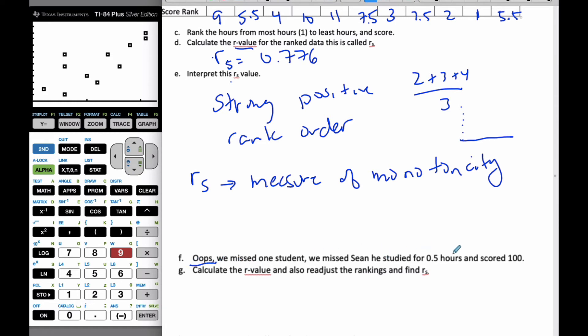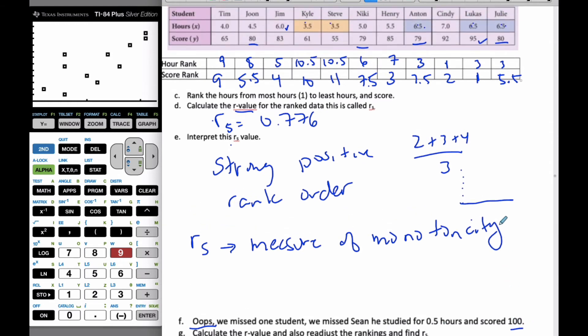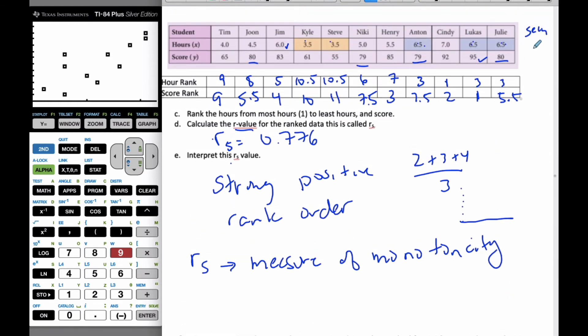We missed a student. Sean studied for 0.5 hours and scored 100. If I add Sean, he studied for 0.5 and he scored 100. That's going to cause grief throughout my rankings and my linear scenario. He is the lowest value, so that's quite easy. We'll do Sean in green. This was the 11th, so he is going to be 12th here.